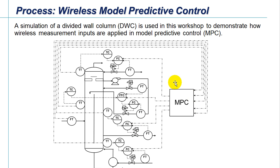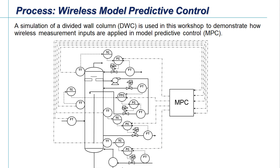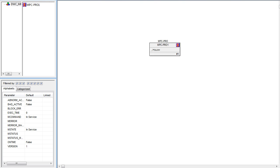This shows the simulation of the divided wall column. Model predictive control is used to adjust the flows on the column. We'll be adjusting the top temperature by adjusting the reflux flow to the column. There are other flows that will be adjusted by model predictive control to maintain composition at different points within the column, but we'll focus in this exercise on the top temperature.